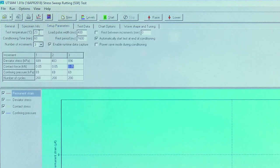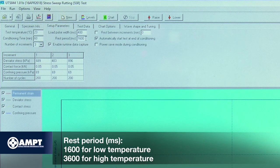Under setup parameters, enter the appropriate test temperatures for the testing location, conditioning time 60 minutes, and number of increments 3. The load pulse width should be 400 milliseconds. The rest period should be 1600 milliseconds for low temperature and 3600 milliseconds for high temperature.